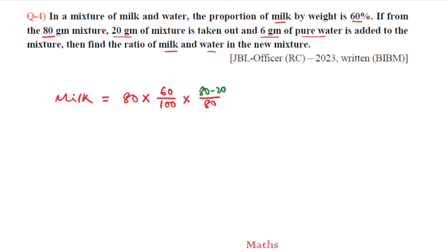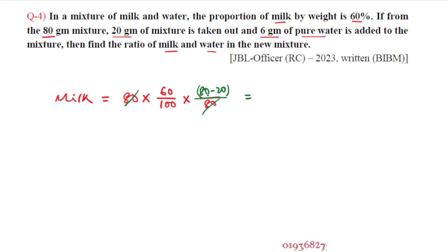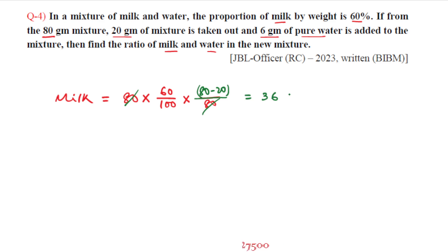When 20 grams of mixture is removed, we remove (60/80) times 20 = 15 grams of milk and 5 grams of water. Wait — checking: milk remaining is 48 minus 12 = 36 grams. After removing 20 grams (proportionally), milk left is 36 grams.